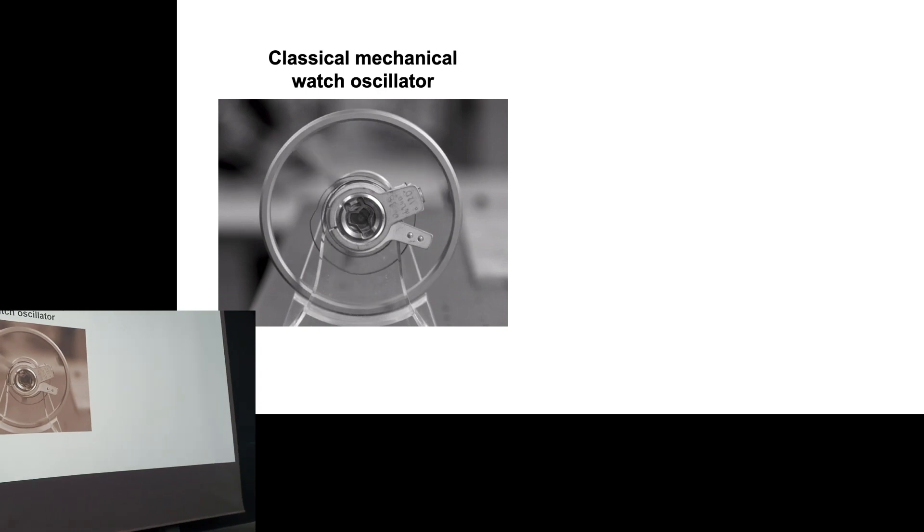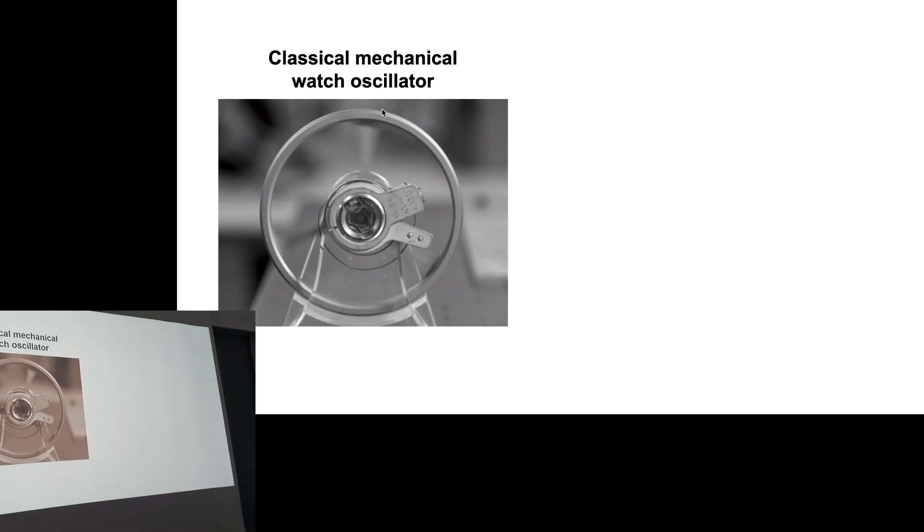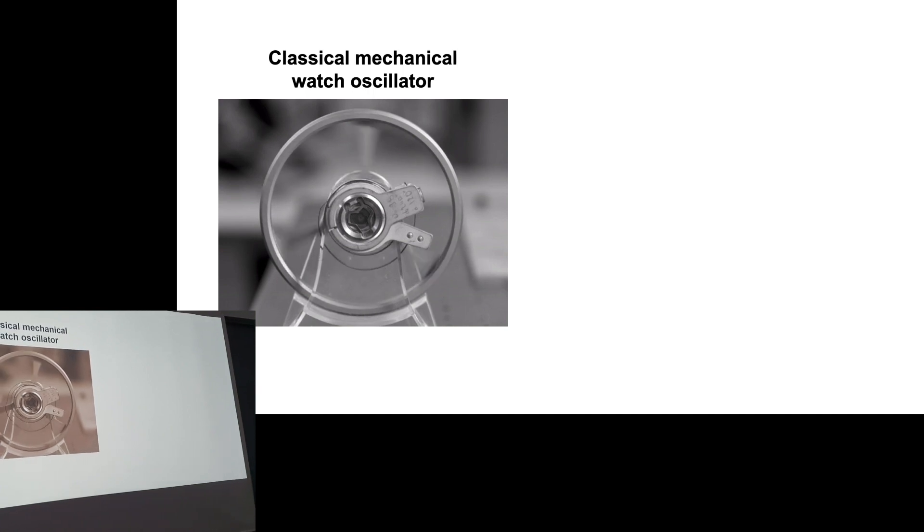In a mechanical watch, you usually have an oscillator that is made of a spiral spring that is connected to a balance wheel and rotates on a pivot. And this is a key component of the watch because it's what gives its regularity and is essential for accurate timekeeping.